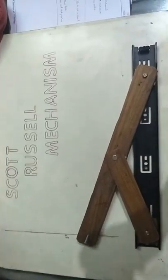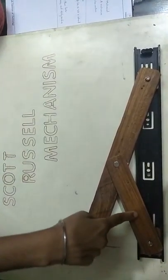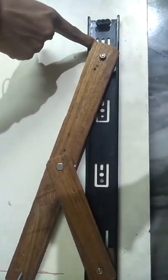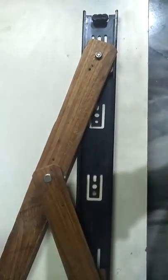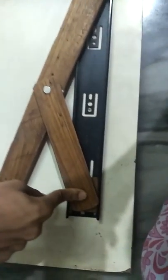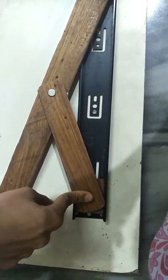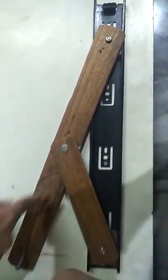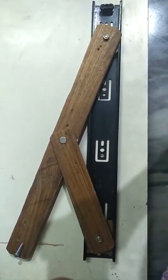In Scotch Russell Mechanism, we will have three links. This is my first link, this is my second link, and this is my third link. So this link, my first link, is fixed. As I told you, straight line motion is seen when one link is fixed. So this link is fixed and this link will be sliding, and this sliding link will produce a straight line.